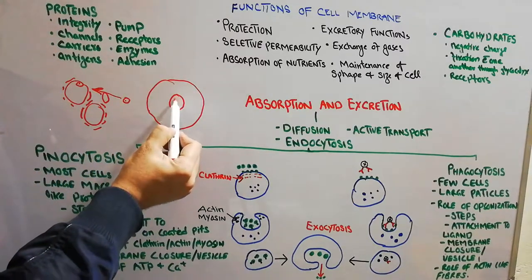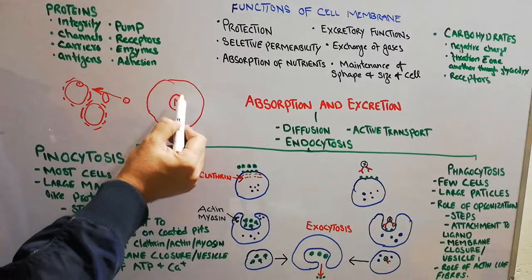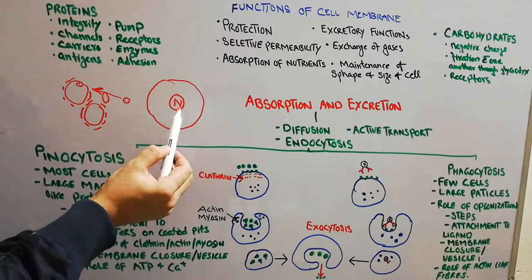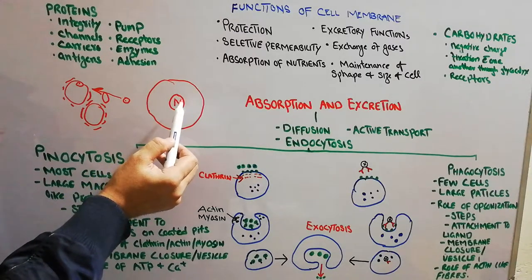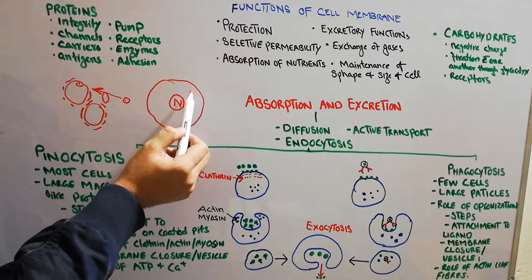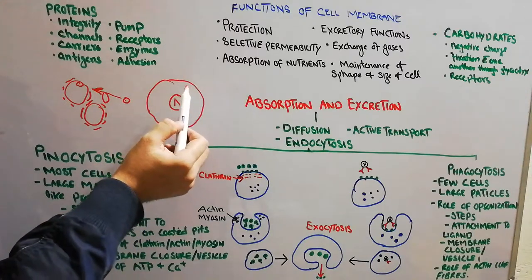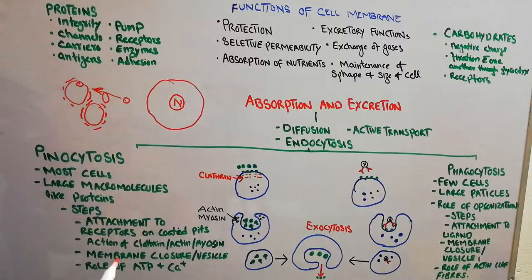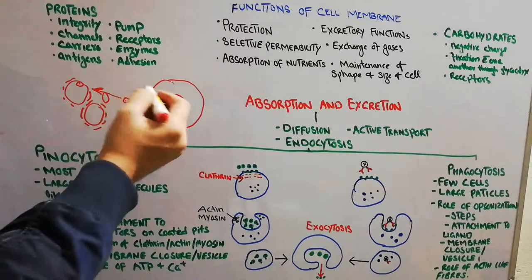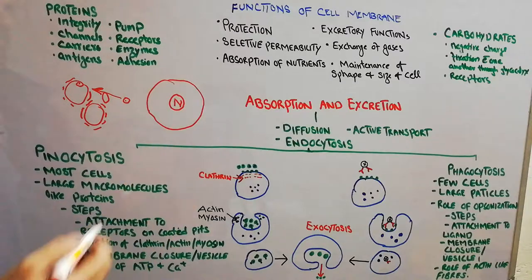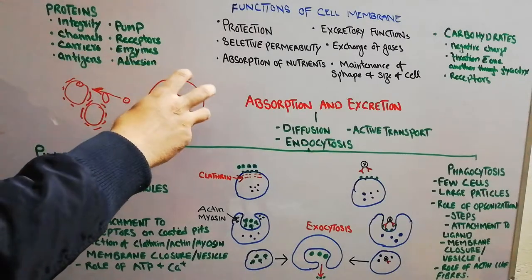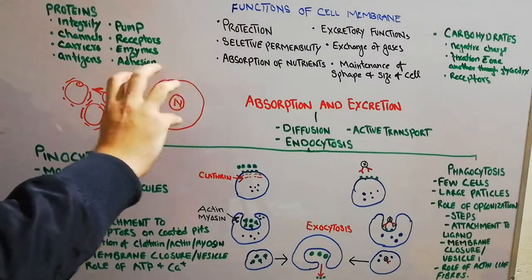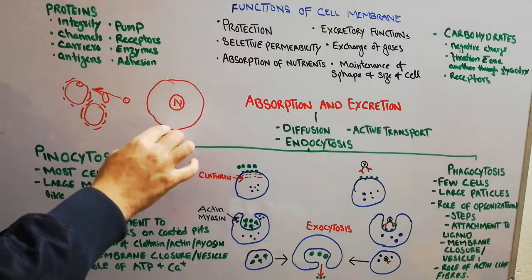The cell has a nucleus inside, and outside the nucleus is cytoplasm. The nucleus is separated from the cytoplasm by a nuclear membrane, and the cytoplasm is separated from the extracellular fluid by the cell membrane or plasma membrane. The cell membrane is made of a lipid bilayer — two layers of lipids — with different proportions of carbohydrates, proteins, and cholesterol.